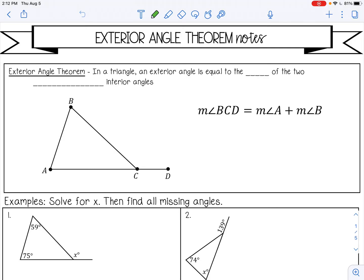Welcome to this lesson on the exterior angle theorem. The exterior angle theorem says in a triangle, an exterior angle is equal to the sum, so that means to add, of the two non-adjacent, that means not next to, interior angles.